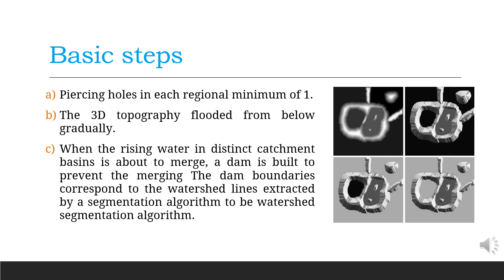The basic steps involve piercing holes in each regional minimum of the 3D topography, flooded from below gradually. When the rising water in distinct catchment basins is about to merge, a dam is built to prevent merging — dam boundaries corresponding to the watershed lines extracted by the segmentation algorithm. In the figure, part a is the original image, part b is the topographic view, and parts c and d are two stages of flooding.